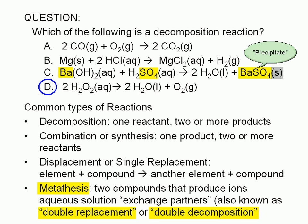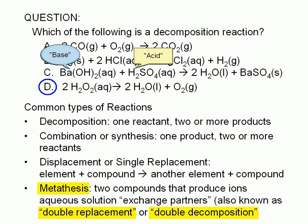The reaction in choice C is also called an acid-base neutralization reaction. Barium hydroxide is a base, and H2SO4 is an acid, sulfuric acid. Anytime you mix an acid and a base, you get water and a salt. The salt in this case is barium sulfate. The molecules are formed as hydroxide ions combined with the hydrogen ions.